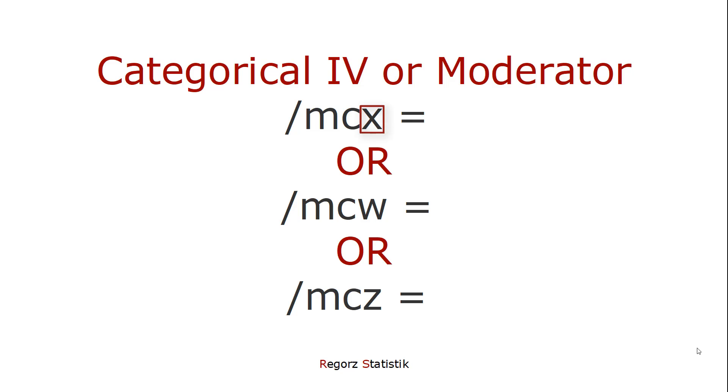For the independent variable and for the moderators, you can include categorical variables. For binary variables, you don't have to change anything. You can put them in your normal syntax. But if you have three or more levels for the categorical variable, then you need the MCX for the independent variable or MCW or MCZ for the moderator variables.